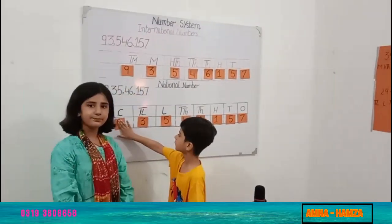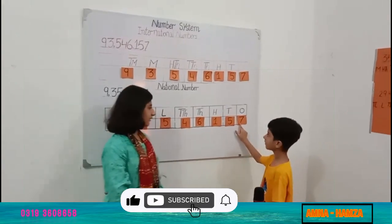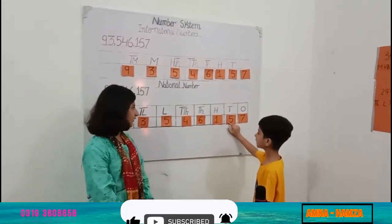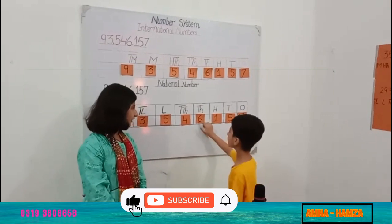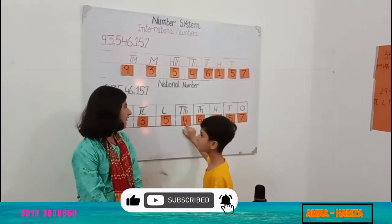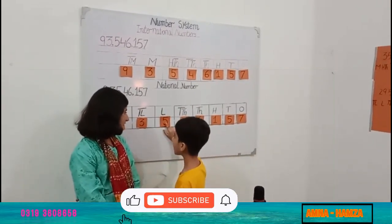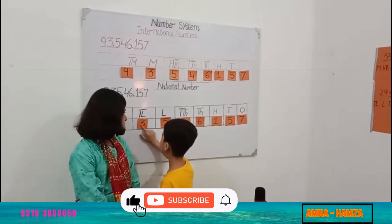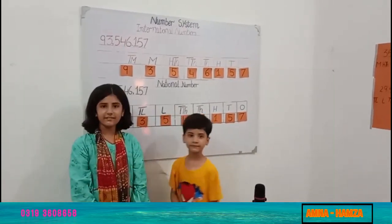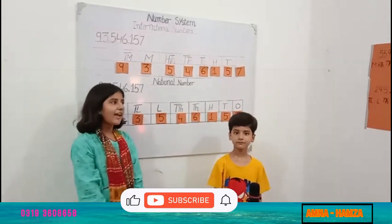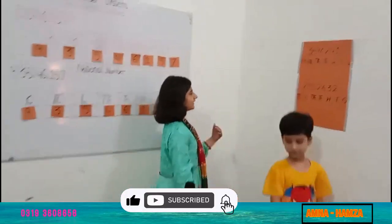My 7 is 7, 5 is 50, and 1 is 100,000, and 6 is 6,000, and 4 is 40,000, and 5 is 5,000,000, and 30,000,000 and 9,000,000. In this way, we have this value chart.